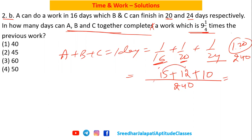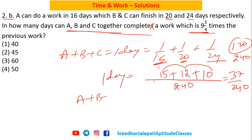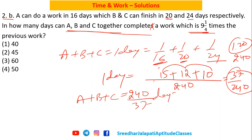So the combined one day work is 15 + 12 + 10 = 37, giving 37/240. This 37/240 is their combined one day work. Therefore they will finish the work in 240/37 days. That is the time to complete one work.